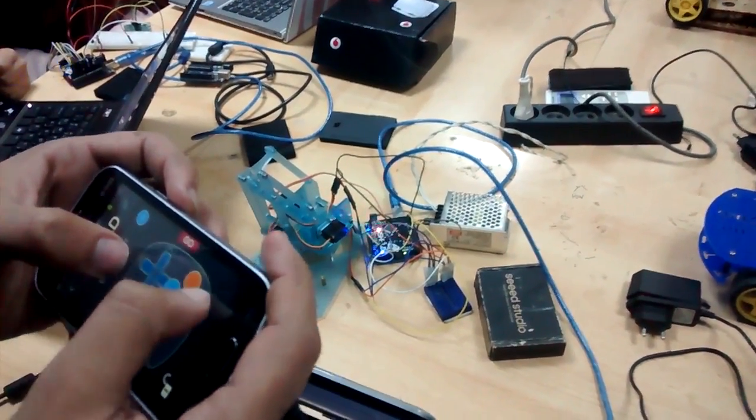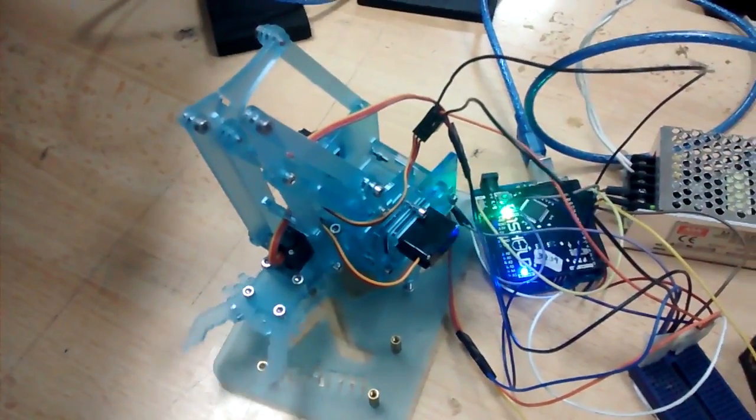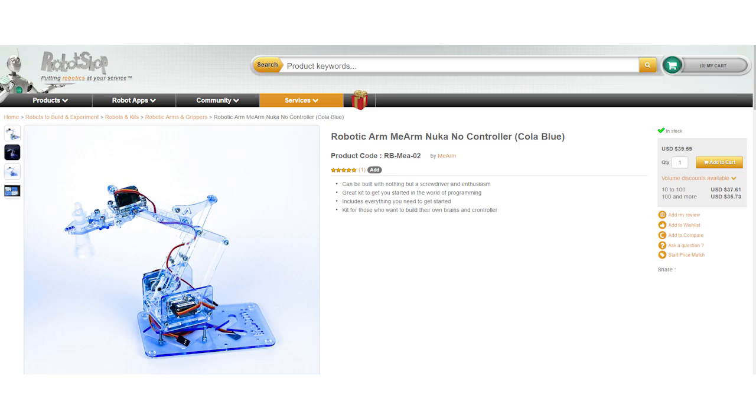Our interns have actually worked with it before. They used the gamepad shield and 1Sheeld to control the arm via smartphone. MeArm Kit is available on Robotshop for $39.95.